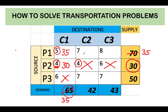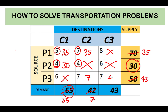Among the available cells, the transportation costs are 7, 7, 7, and 8 — there are three 7s. We pick one, say the 7 at row 1, column 2. Comparing the demand of 42 and the remaining supply of 35, the lower is 35, so we allocate 35 from P1 to C2. P1 is now exhausted. A remaining demand of 7 is unfulfilled for C2. For the remaining two cells, both costs are 7, so we allocate 7 from P3 to C2. Subtracting 7 from P3's supply of 50 leaves 43, which is allocated to the last vacant cell — P3 to C3.